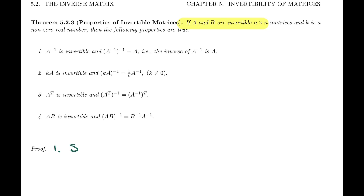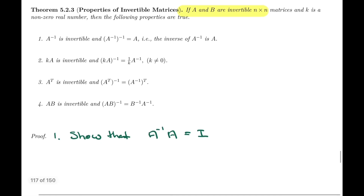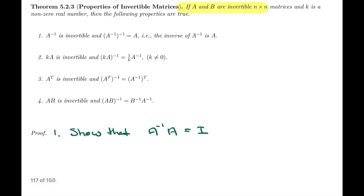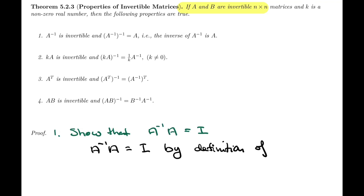So let's write what it is that we want to prove. How do we show that the inverse of A inverse is A? We have to multiply them — A inverse times A — and show that that's equal to I. That's all there is to this type of proof. We start from the left-hand side and develop it. A inverse times A is equal to I by definition of A inverse, and that's what we wanted to prove.